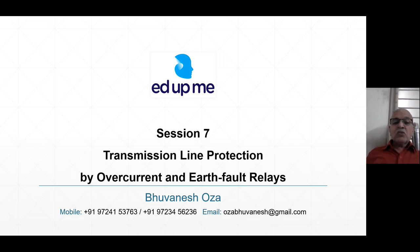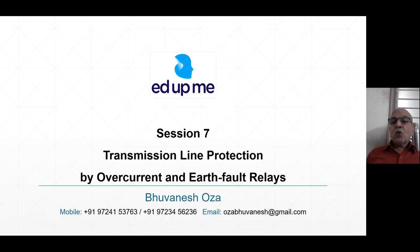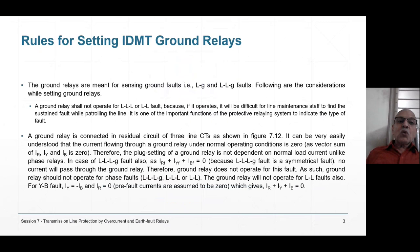Today we are going to see the ground relay — how ground relays are set. That is for LG and LLG faults. LLG fault is a hybrid fault: LL is a line fault, but LLG is a ground fault. Because the ground relay is more sensitive, it will operate first in LLG faults. So we consider LLG and LG, and LG fault current — R-to-G, Y-to-G, or B-to-G — is what we consider for relay calculations.